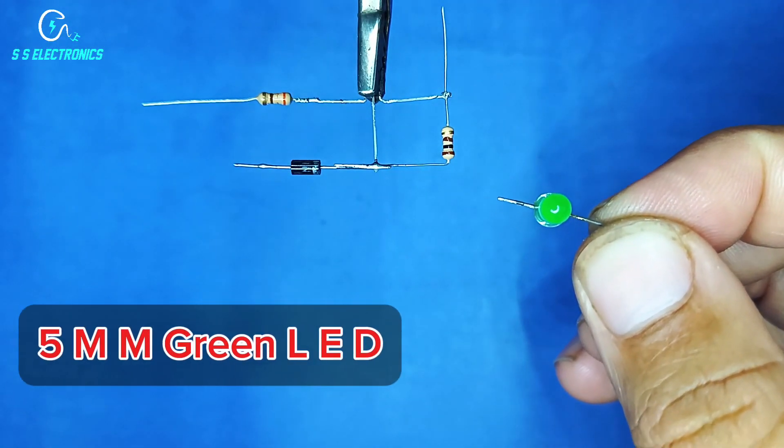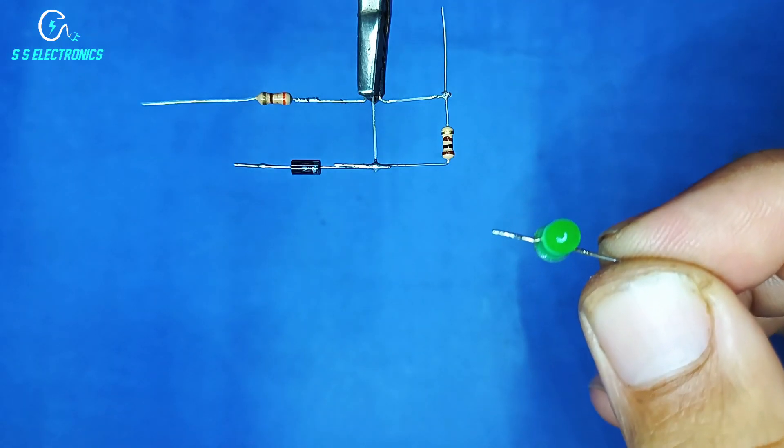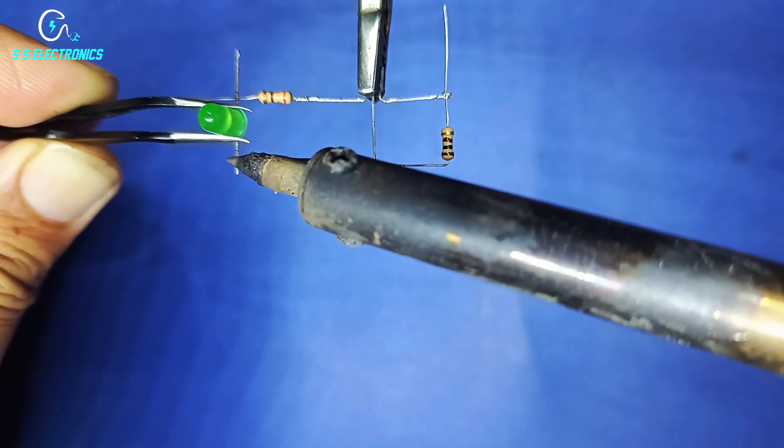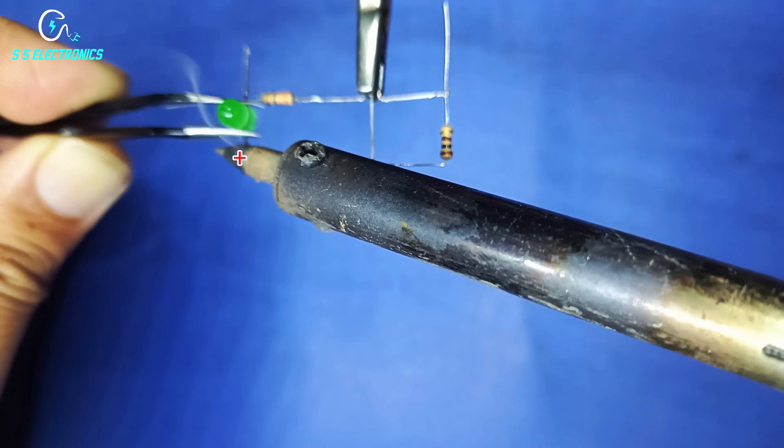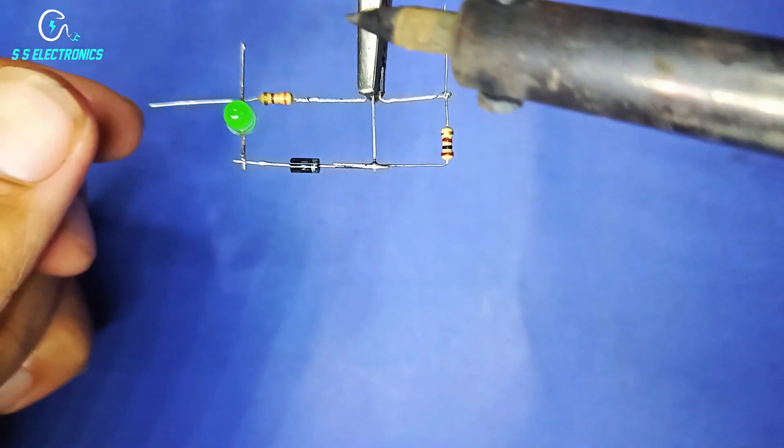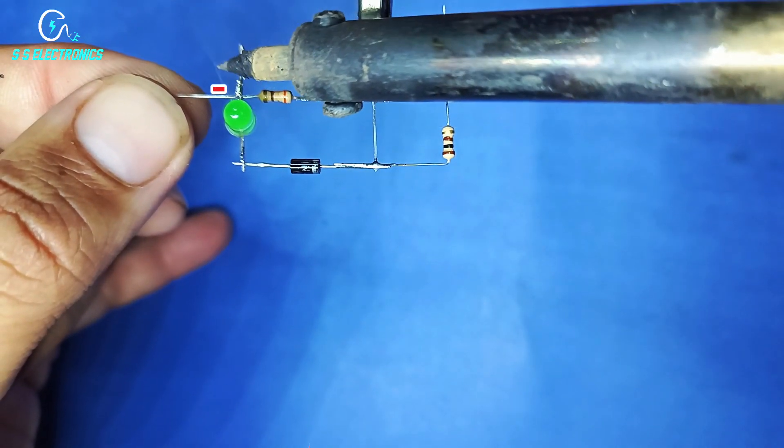5mm green LED. Green LED positive side connecting with diode pin. Green LED negative side connecting with 330 ohm resistor.